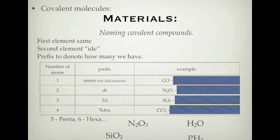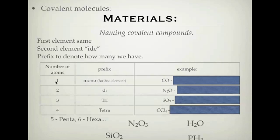Here is a slide explaining how we name covalent compounds. The first element stays the same. The second element — you change the ending to '-ide', similar to ionic bonding, but that's where the similarities end. A prefix at the start of a word denotes how many of something we have: mono for one, di for two, tri for three, tetra for four, penta for five, hexa for six.